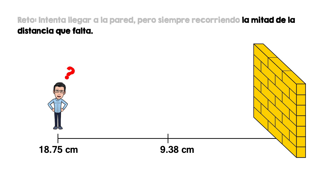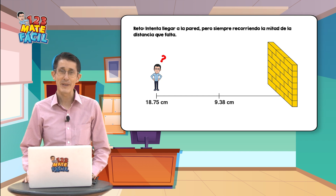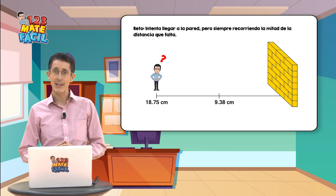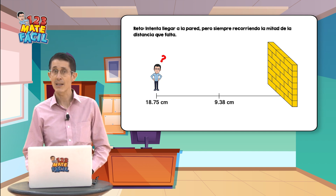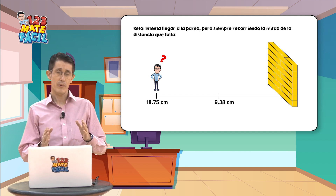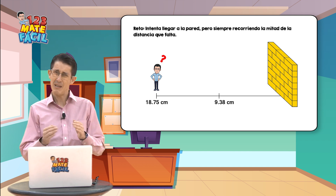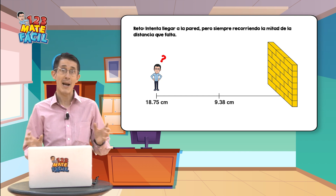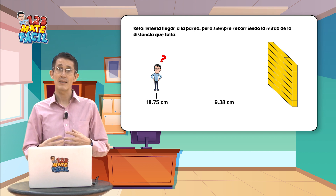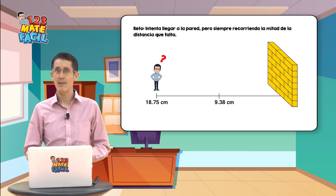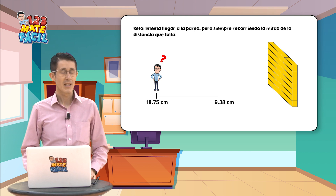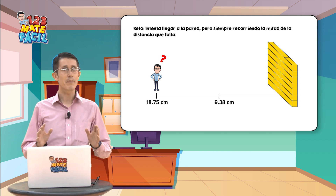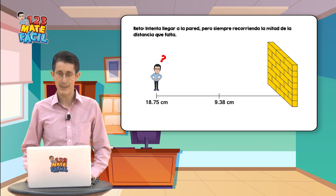Como pudimos ver en ese ejemplo, el reto que le pusimos al Guillito era que tratara de llegar a tocar la pared con la condición de siempre caminar hasta la mitad de la distancia que le falta. Siempre estuvimos ampliando la escala porque la distancia se hacía más pequeña, y así hubiéramos estado hasta el infinito. Por lo tanto, el Guillito nunca va a llegar a tocar esa pared.